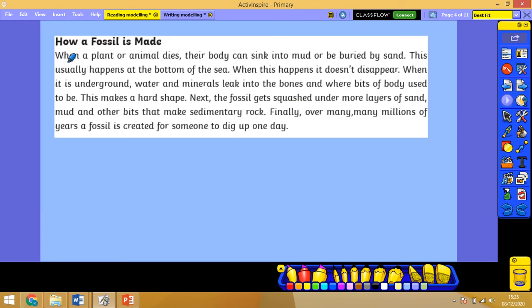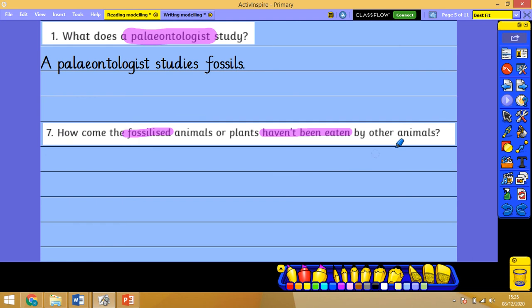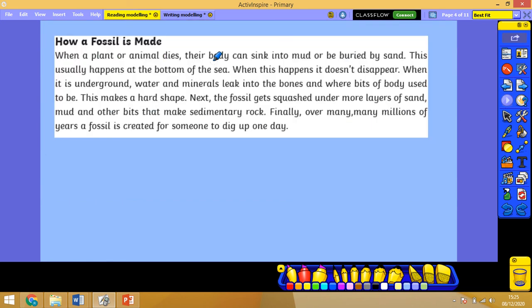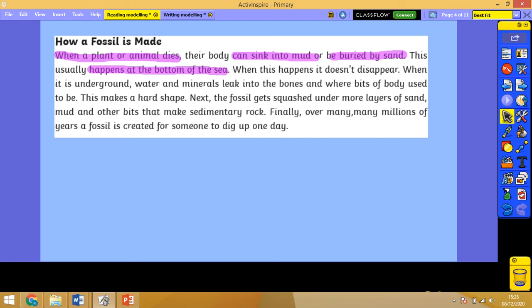Now if I have a look in how a fossil is made, I'm just going to read this. When a plant or animal dies, their body can sink into the mud or be buried by sand. This usually happens at the bottom of the sea. When this happens it doesn't disappear. When it is underground, water and minerals leak into the bones and where bits of body used to be. Now I'm not getting an awful lot on other animals eating things here, but what I have found here is when a plant or animal dies, their body sinks into the mud or is buried by sand, and it happens at the bottom of the sea. It doesn't mention anything about being eaten by other animals, but I can use this information here to answer the question.